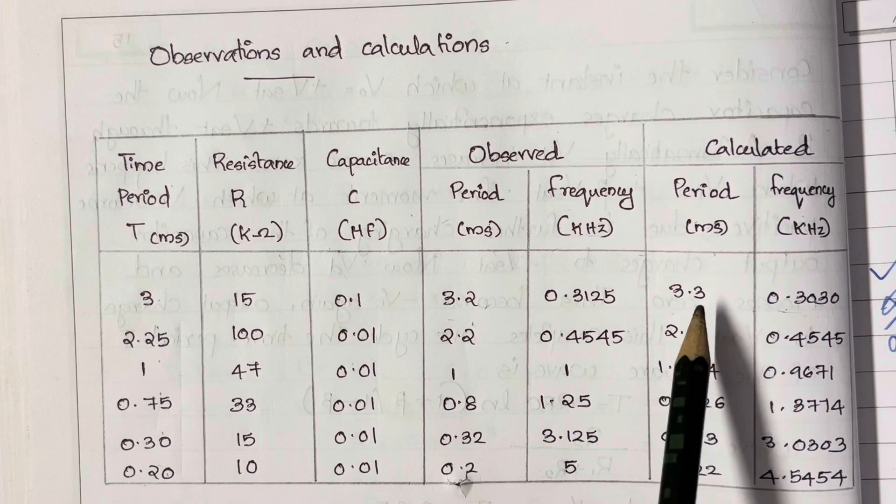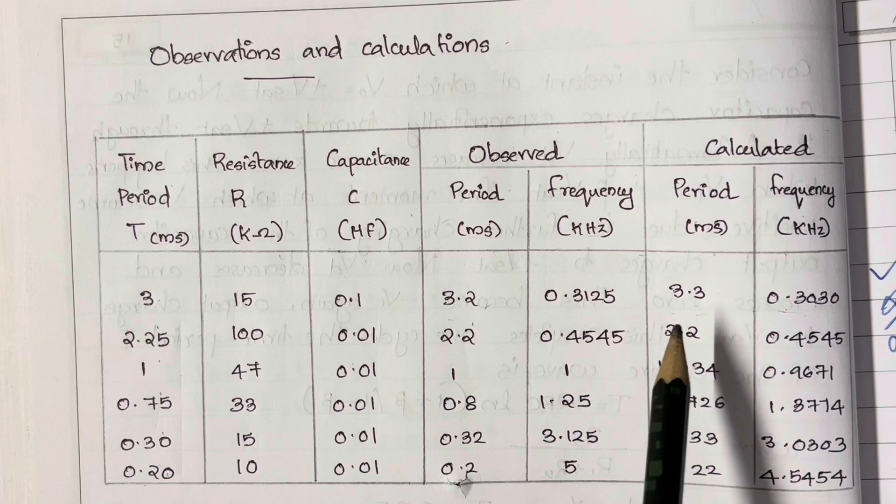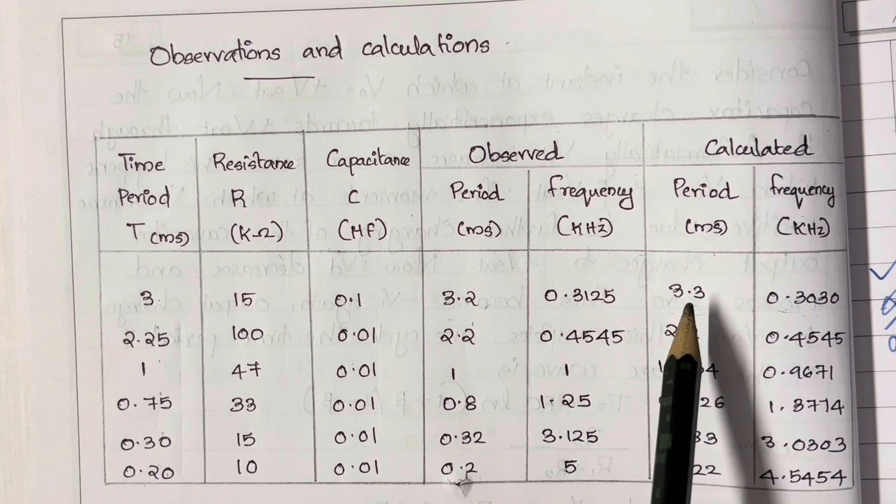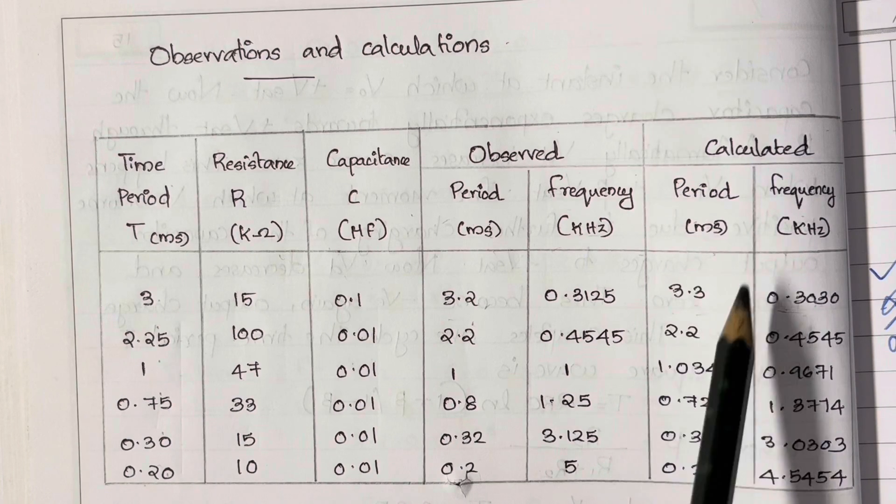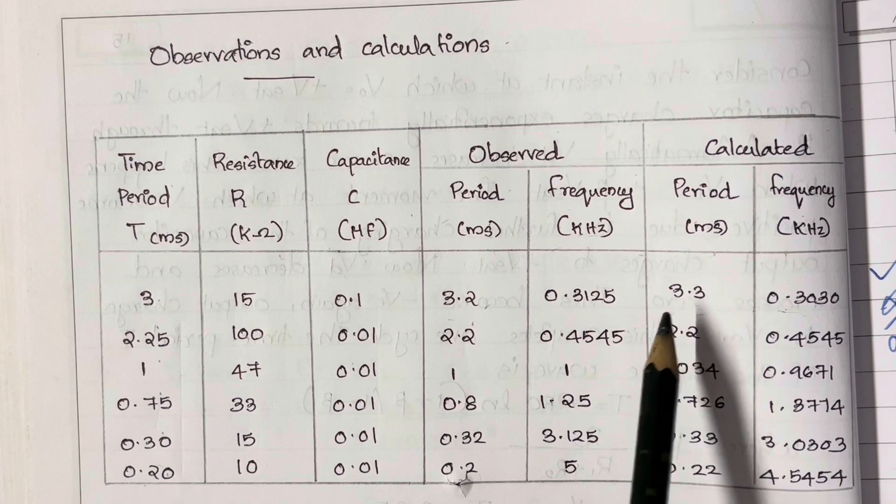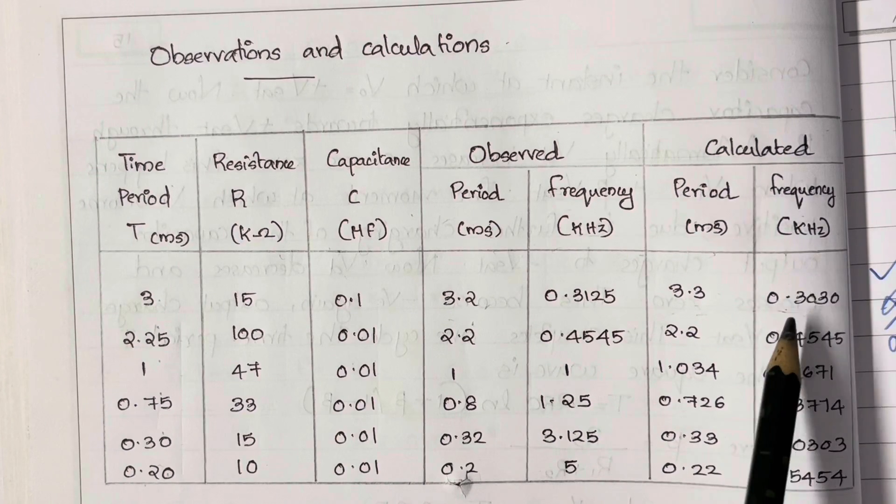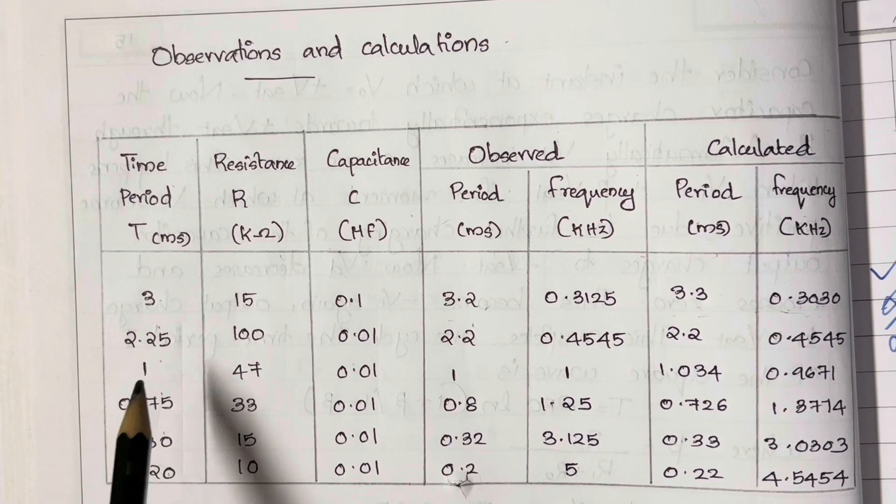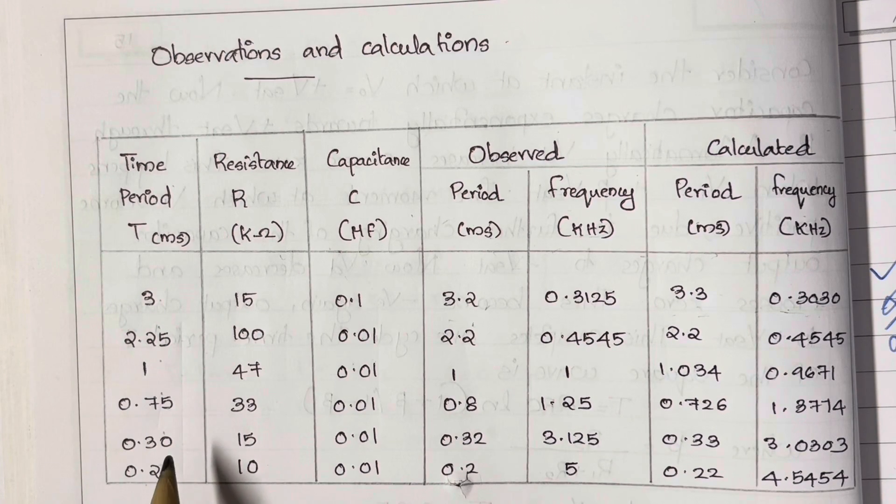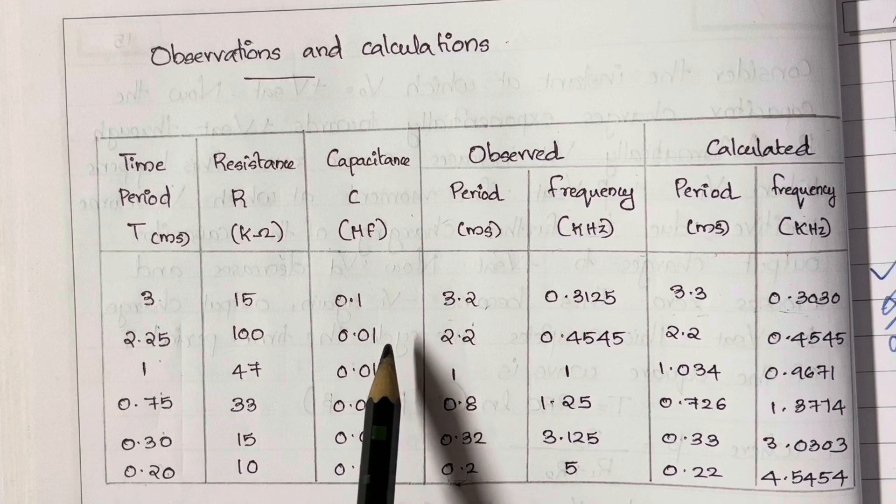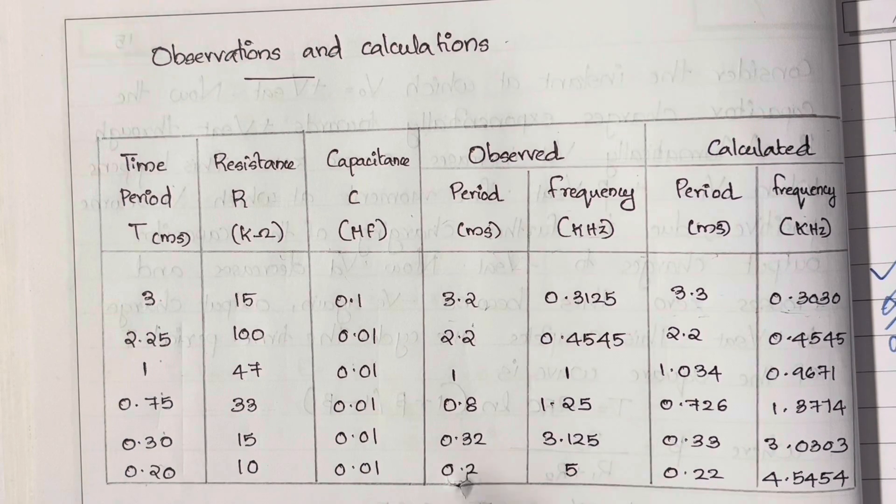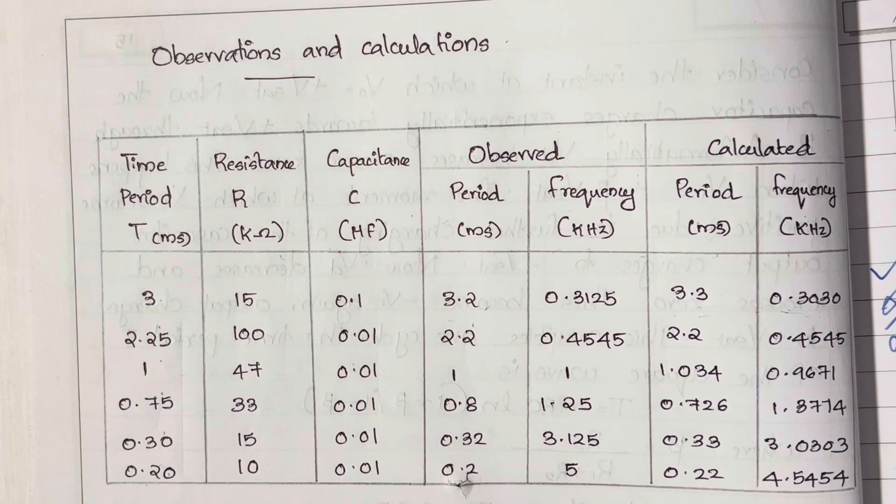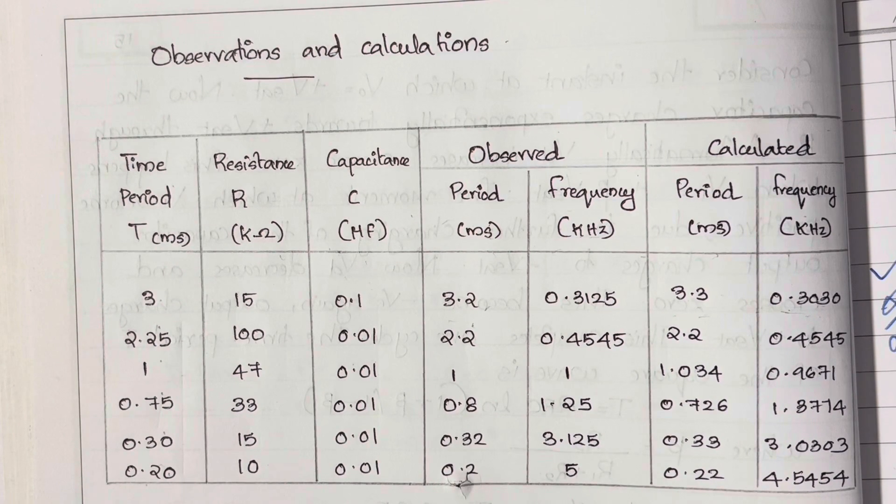Here we have taken 15K ohm instead of the calculated value of R which was 13K. Then use 15K to calculate time period as T equals 2.2RC. Then the reciprocal gives frequency. In the time period column they have repeated the experiment for five more different values of time period. They have taken the same value for capacitance. You can take any value as per the availability of capacitor.